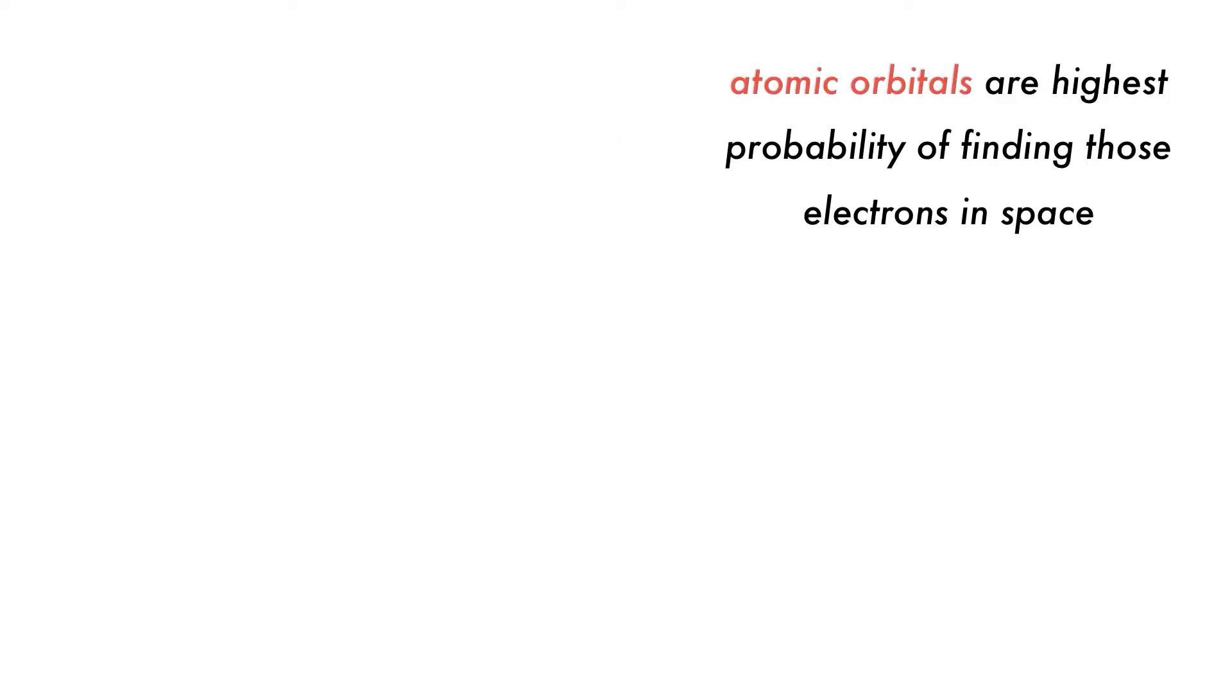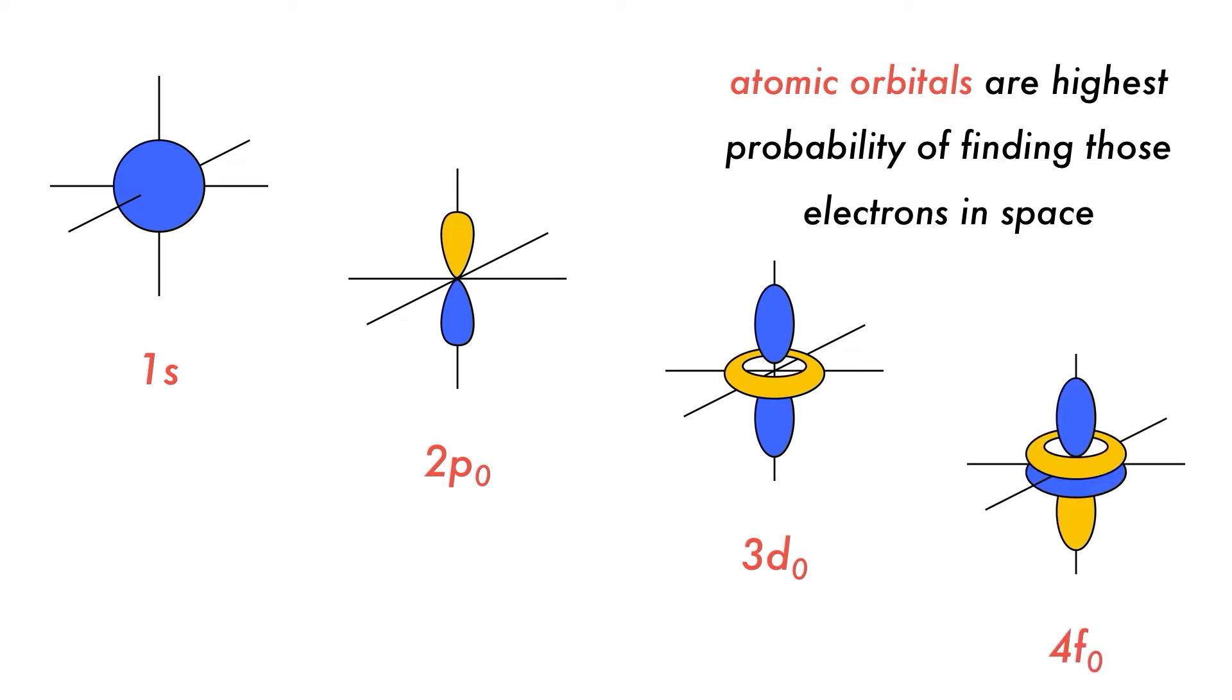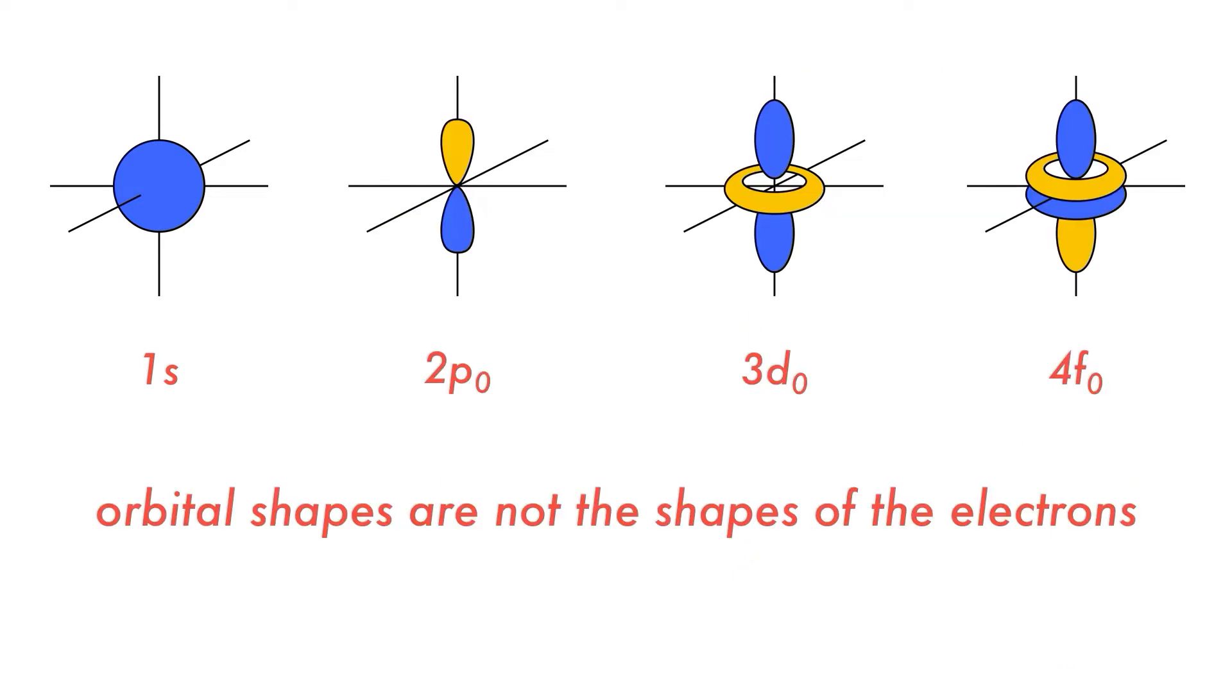There are four types of atomic orbital: s or sharp, p or principal, d or diffuse, and f or fundamental. But remember these are not the shapes of the electrons, but rather regions in three-dimensional space with high probability of finding an electron. The shapes of the atomic orbitals are the area where probability of finding the electrons is high.